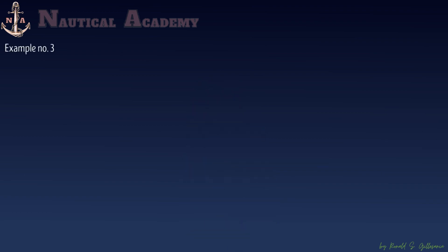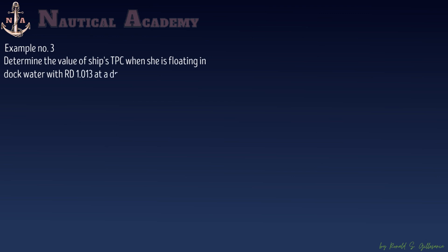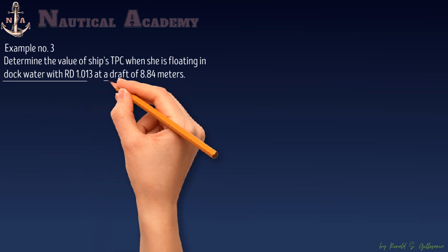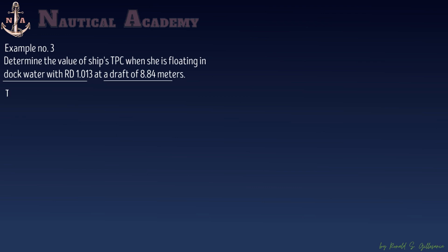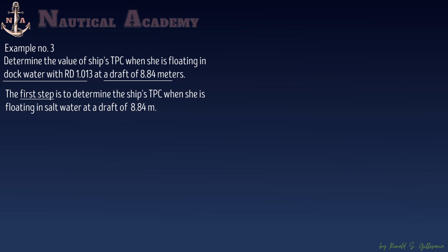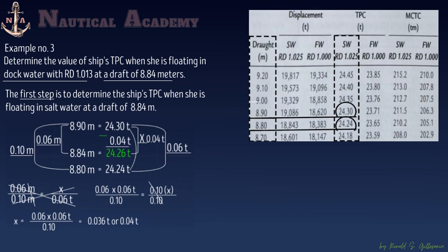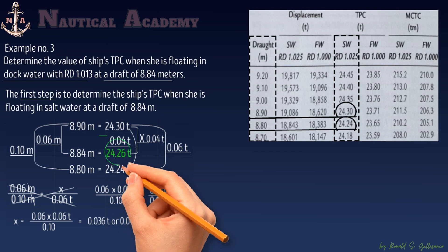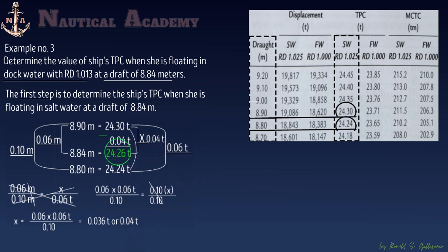The third example: determine the ship's TPC when she is floating in dock water with a relative density of 1.013 at a draft of 8.84 meters. The first step is to determine the TPC in salt water at 8.84 meters, which was already shown in the previous example. The TPC in salt water at 8.84 meters is 24.26 tons.